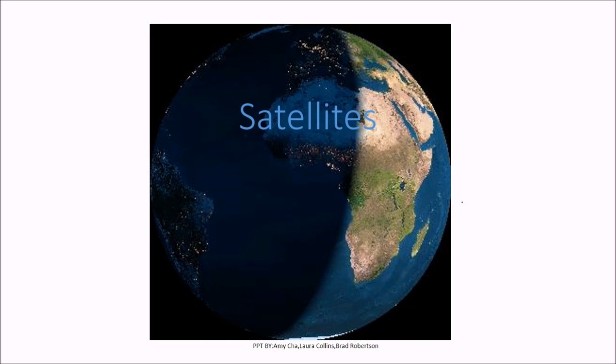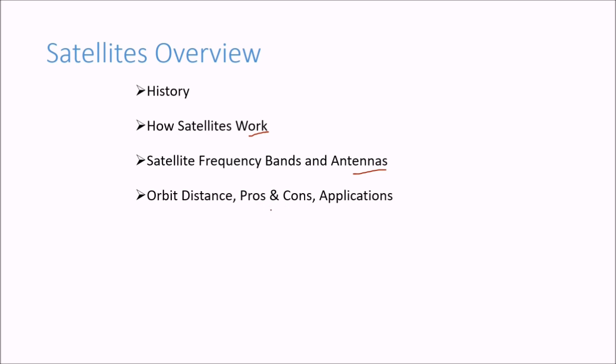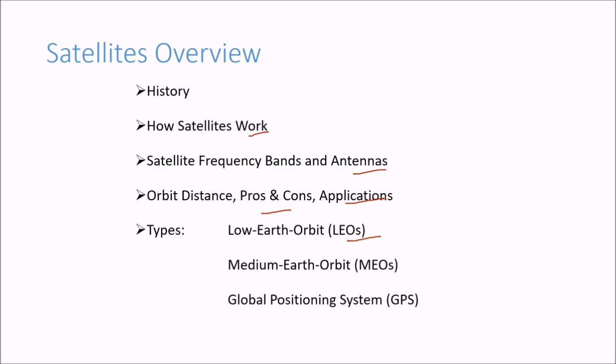We will talk about satellites today. We will see the history, how satellites work, satellite frequency bands and antennas, the orbit distance, the pros and cons and applications at each orbit. The types of satellites we categorize into LEO, that is low earth orbit, then medium earth orbit, GPS global positioning system, and finally geostationary or GEOs.